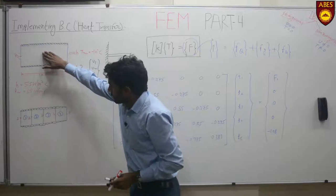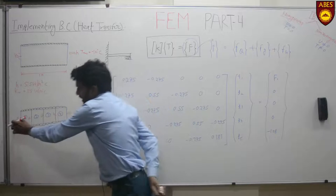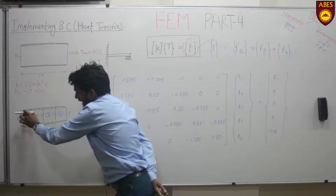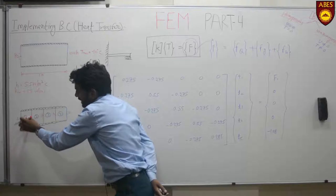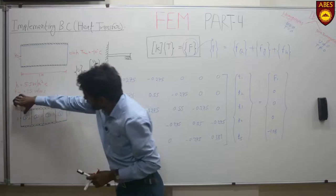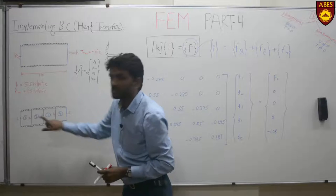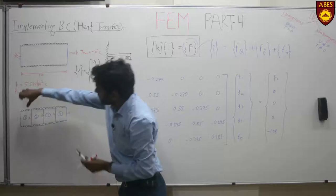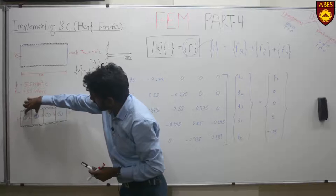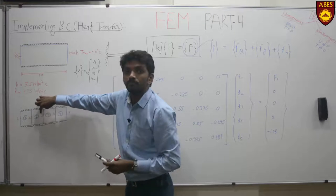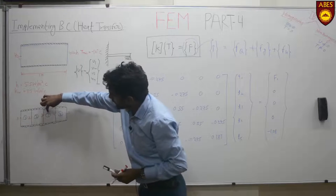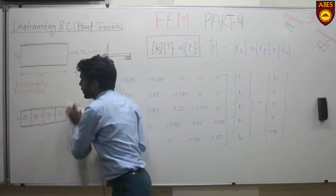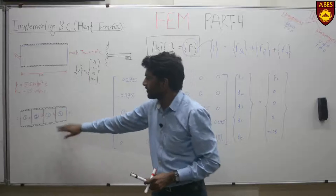To solve this particular problem, we have discretized this particular domain into 4 parts. There are 2 types of numbering — with circle and without circle. To number the elements, we circle that particular number. So elements 1, 2, 3, and 4 are numbered with circles. Starting from the left, part 1 has nodes 1 and 2; node 2 is shared between part 1 and part 2, so part 2 has nodes 2 and 3; part 3 has nodes 3 and 4; part 4 has nodes 4 and 5. We have 4 parts and 5 nodes.